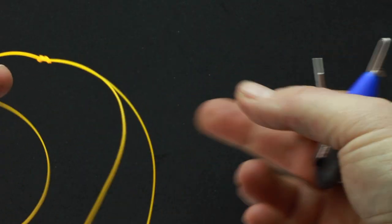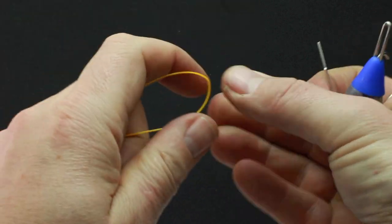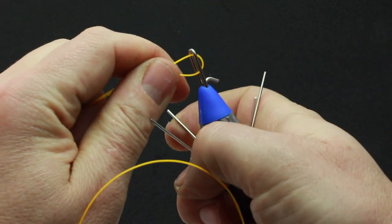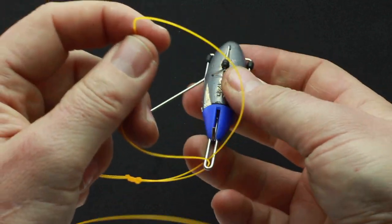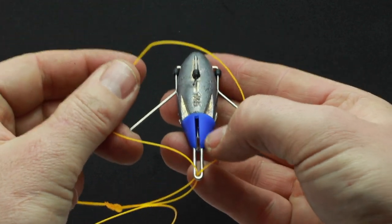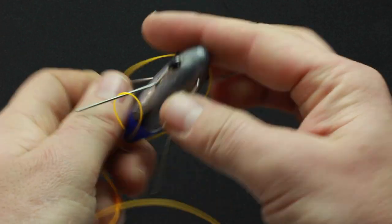Traditionally for mackerel rigs, you actually go straight onto the lead. You can of course use a swivel here, but you need to make sure there's a nice big loop with that figure of eight to go over the lead, using minimal amount of tackle there.